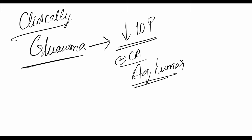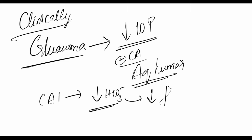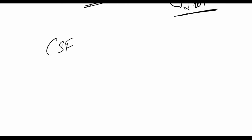The exact mechanism is: carbonic anhydrase enzyme inhibitors decrease the bicarbonate content of the aqueous humor, and hence decrease the fluid content, thereby decreasing intraocular pressure and treating glaucoma.